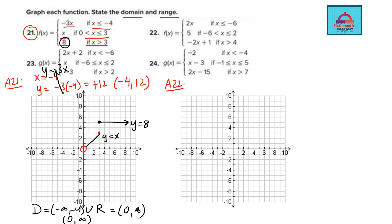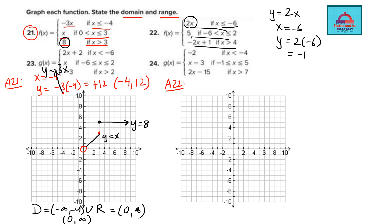In a similar way we do question 22. There are again three parts. The first part is y equal to 2x, valid when x is less than or equal to minus 6. At x equals minus 6, y equals 2 times minus 6, which is minus 12. So the point is minus 6 comma minus 12 — a closed dot because equal to is included. This gives us the first piece of the graph.